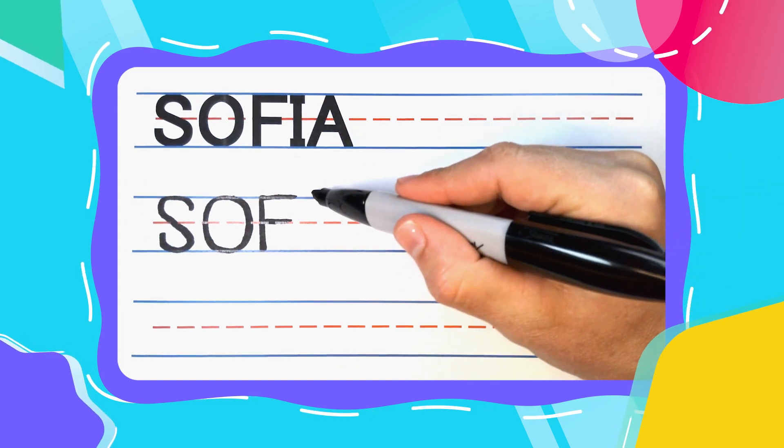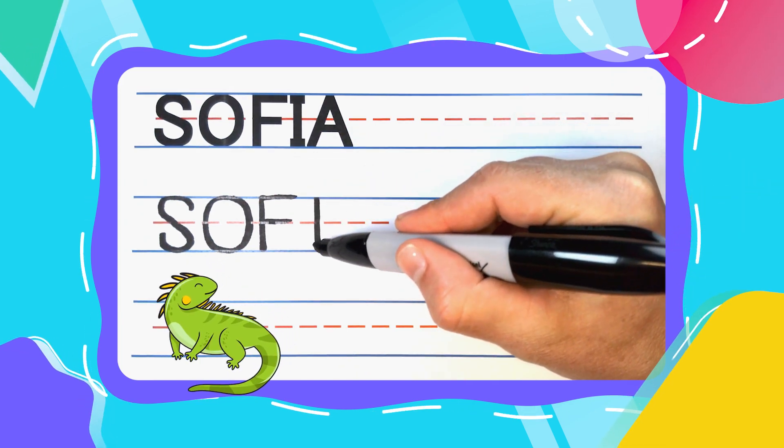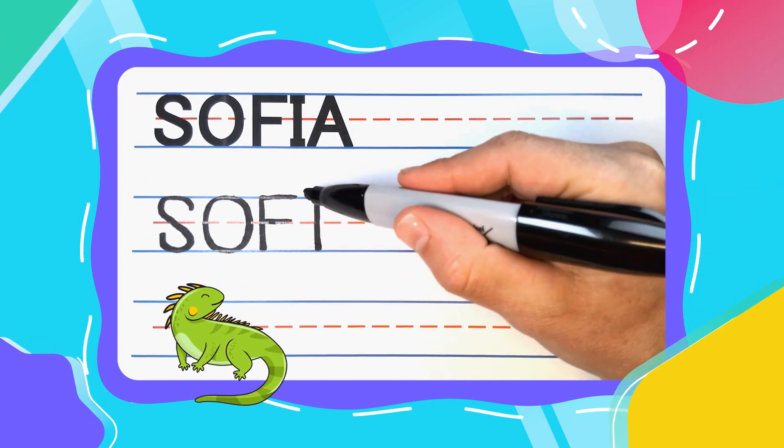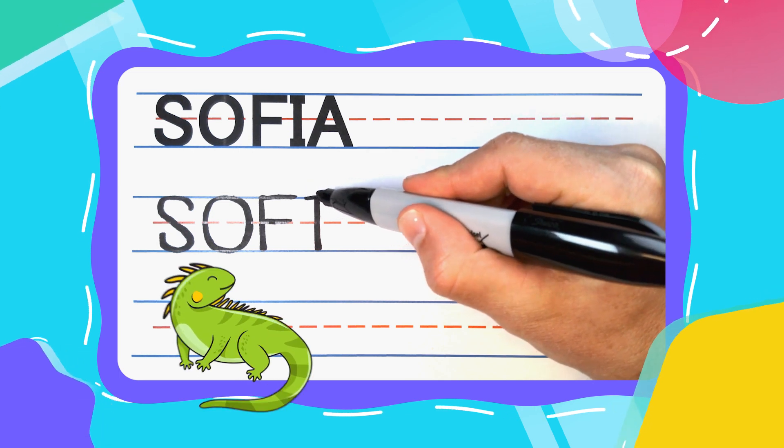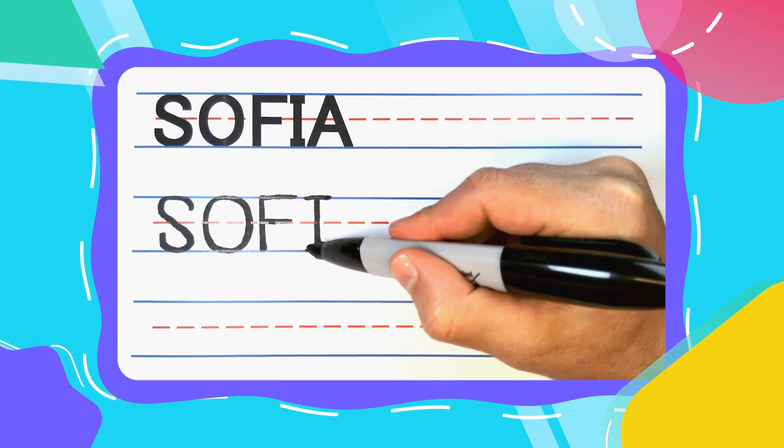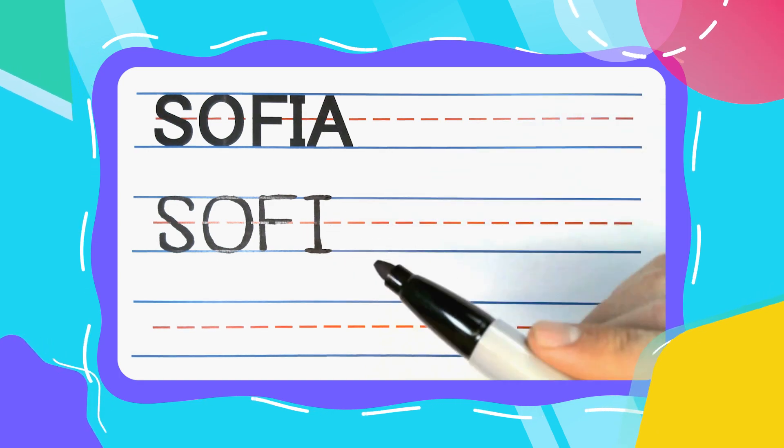The next letter in Sophia is the iguana I. Iguana I start with a straight line down. Come back to the top. And I give my eyes a left to right hat and a left foot and a right foot at the bottom.